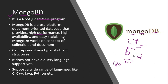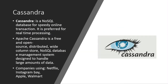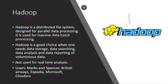Cassandra overcomes this limitation because it has multiple masters managing multiple queries simultaneously, making it more robust for non-structured data. MongoDB does not have its own query language, but it supports a wide range of programming languages like C++, Java, Python, and others — which is also true of other big data softwares.